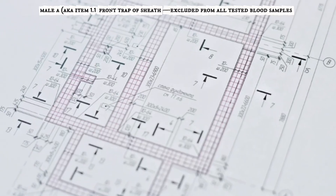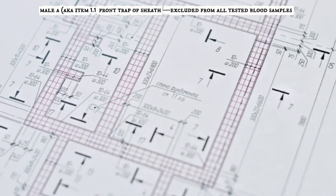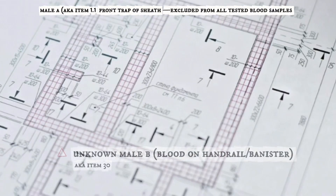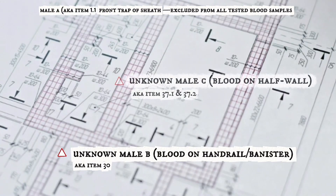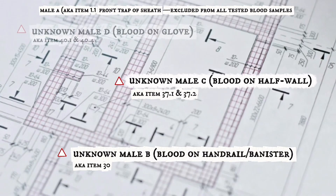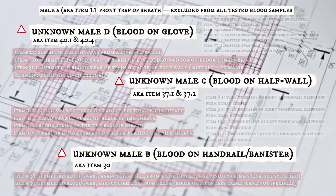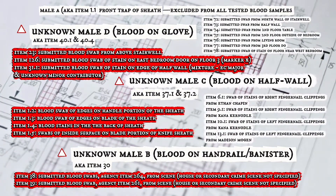And it doesn't stop at the sheath. On the stair handrail inside the house, there's a major unknown male and a blood stain on the banister — Male B. On two different wall swabs, there's an unknown male blood sample on the half wall — Male C. Outside in the driveway, there's a glove with blood on the inside and outside — Male D. None of these men are the victims. None of them are the named suspect. Most of them never make it into CODIS.